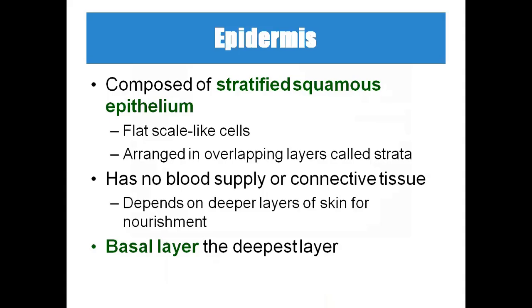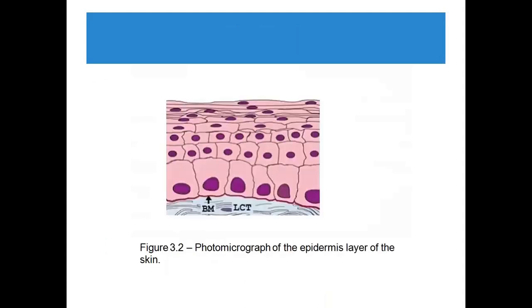The epidermis is made up of stratified squamous epithelium. Stratification means layers; squamous means flat. Flat scale-like cells are arranged in overlying layers called strata. The epidermis will not have any blood supply — it depends on the dermis for blood supply. The basal layer is the deepest layer and continuously divides to produce new cell layers; older cells die and newer cells are pushed toward the top layer.